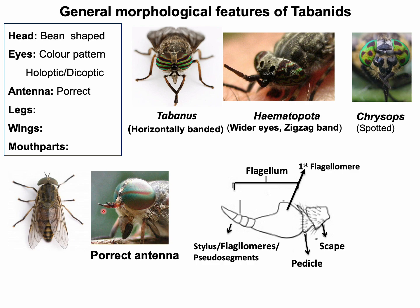There are three types of antennae for different arthropods. For Tabanid flies, the antenna is stylet type with three segments: the first segment is called the scape, the second is the pedicel, and the third is the flagellum. The flagellum has several sub-segments, and based on the number of segments in the flagellum, different genera can be identified. For example, Pangonia has seven or eight segments, whereas Tabanus has five segments in their flagellum.